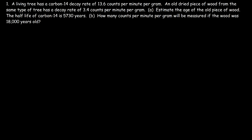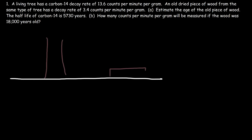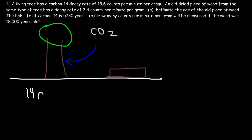First let's understand the problem. Why are the decay rates different in the living tree and in the dry piece of wood? Let's draw a picture to understand what's happening. The living tree is constantly absorbing carbon dioxide from the air. As a result, some of these carbon atoms will be carbon-14, and so the ratio of carbon-14 to carbon-12 in the living tree will be constant, and so its decay rate will be constant.